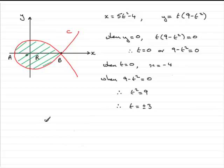So when t equals 3, what do we have for x? Well, 3 squared is 9, 9 fives are 45, take away 4 is 41. So x equals 41.